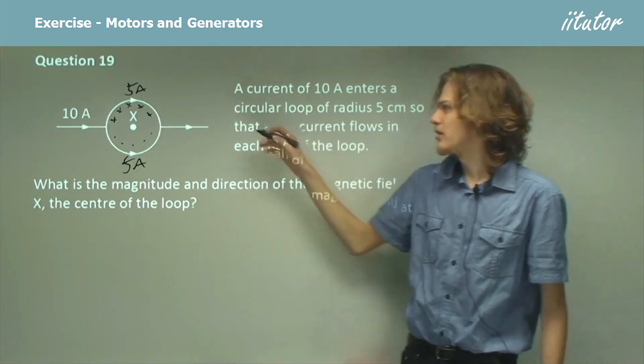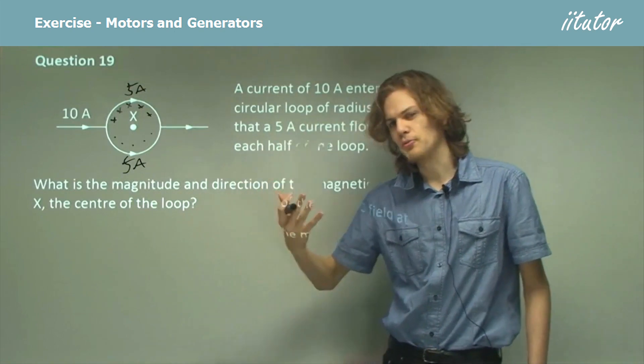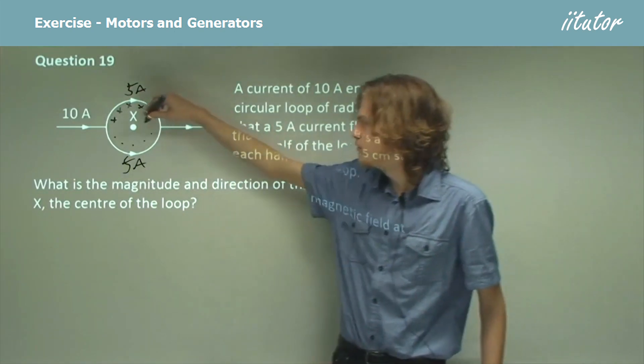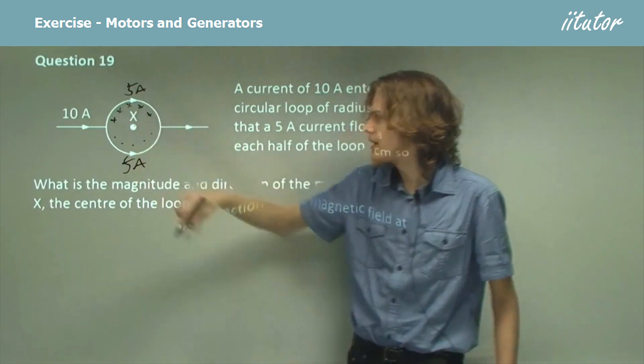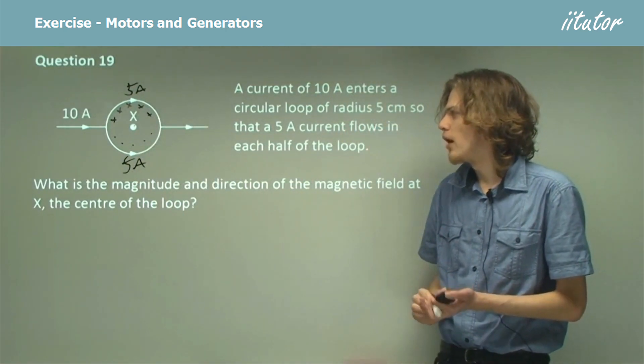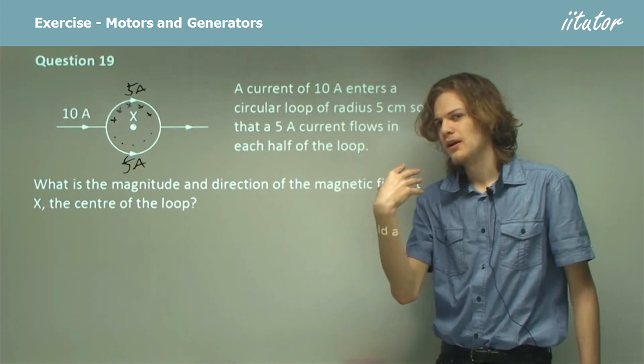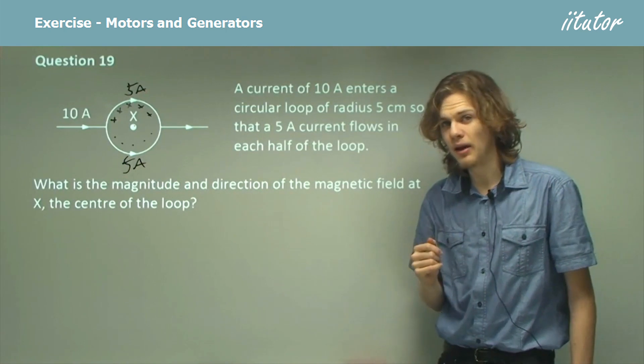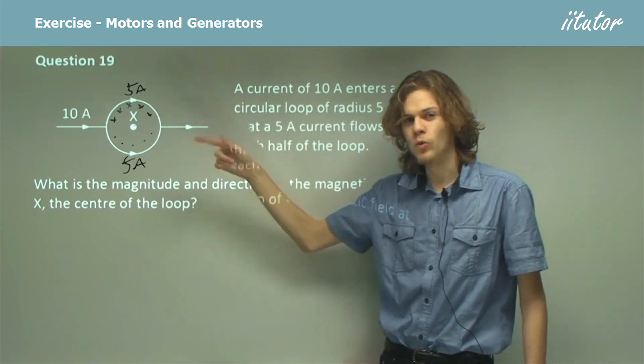Now we know that because it's a circle and circles are symmetrical, the effect of both of these on the very middle of the circle, at x, will be exactly the same. So if the top wire points in and the bottom wire points out, then the net magnetic field right in the middle will be 0.